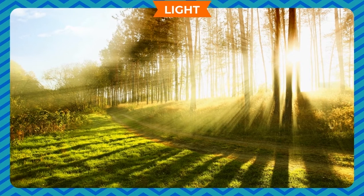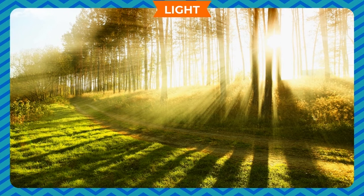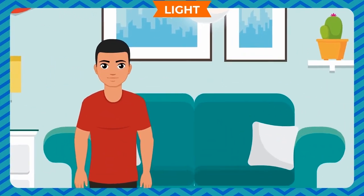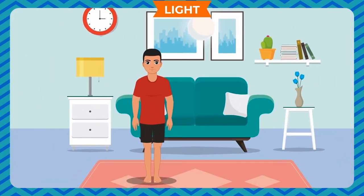Light. You can see things clearly during the day in sunlight, but you cannot see anything in the dark. Suppose you are in a room at night and the light goes off. Can you see things in the room? No, you cannot see them. As soon as the light comes back again, all the things in the room are visible to you. Things are visible only when light falls on them.